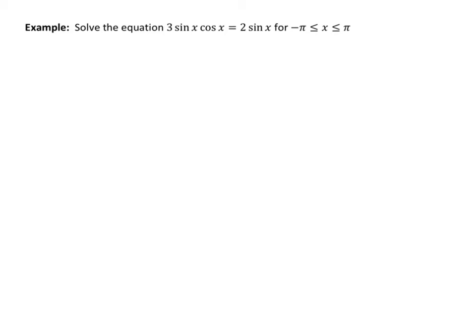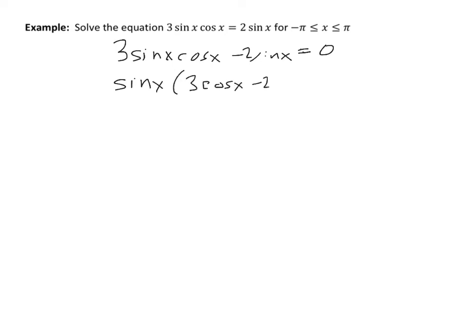For the next example, we're asked to solve an equation. One of our tactics is to move everything over to one side and factor. Doing that gives 3 sine x cosine x minus 2 sine x equals 0. Remember that factoring is only useful as a solving method when it equals 0, because we need the zero product property. I can see that both terms have a factor of sine x, so factoring out sine x gives: sine x times (3 cosine x minus 2) equals 0.